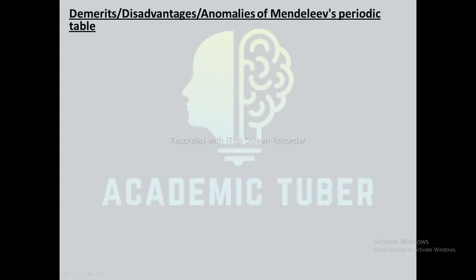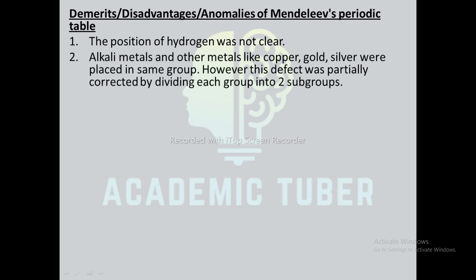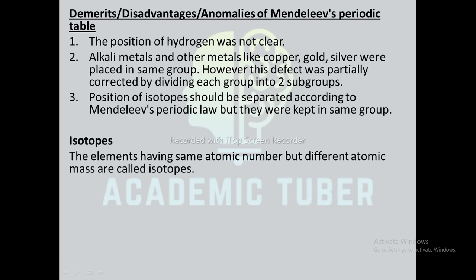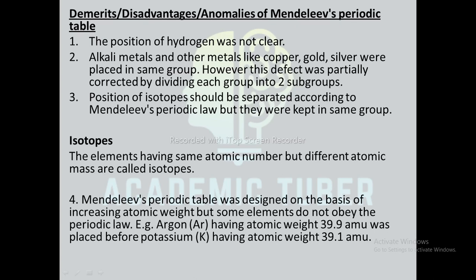Disadvantages or anomalies of Mendeleev's periodic table: the position of hydrogen was not clear. Alkali metals and other metals like copper, gold, and silver were placed in the same group; however, this defect was partially corrected by dividing each group into two subgroups. The position of isotopes should be separated according to Mendeleev's periodic law, but they were kept in the same group. Isotopes are elements having the same atomic number but different atomic mass.